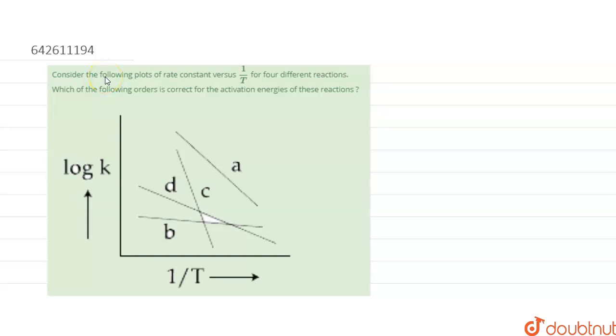Consider the following plots of rate constant versus 1 by T for four different reactions. Which of the following order is correct for the activation energies of these reactions? The following graph is given where log k is on the y-axis and 1 by T is on the x-axis, and four plots are given in this graph.